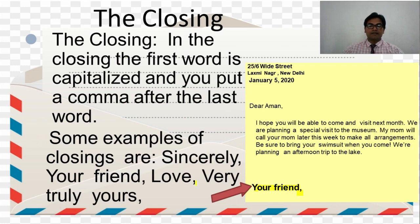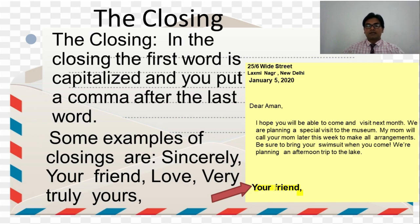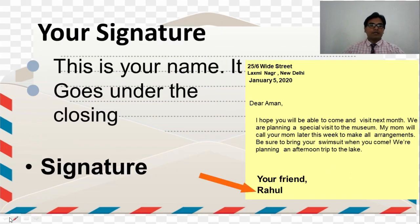These are the closing expressions used in informal letters only. After the body of the letter comes the closing, which includes the information or message. Next is the signature — the name of the writer of the informal letter, written under the closing.